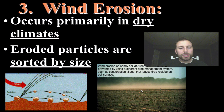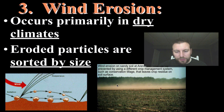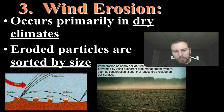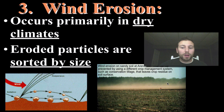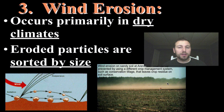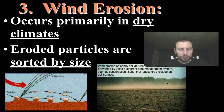Wind erosion is a very big problem in agricultural regions because the finer sediments that carry the nutrients for the soil are going to get blown around, and we don't want that. We want to keep that sediment in an area. It takes years for topsoil to accumulate.